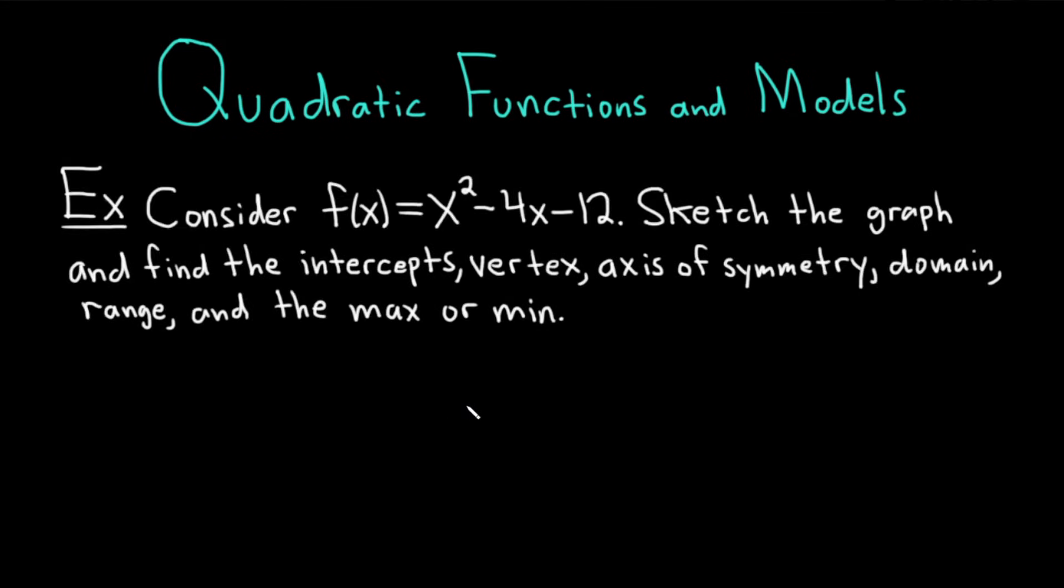Let's look at an example of a quadratic function, and we're going to graph it and find everything. So consider f(x) = x² - 4x - 12. We're going to sketch the graph and find the intercepts, the vertex, the axis of symmetry, the domain, the range, and the max or the min.